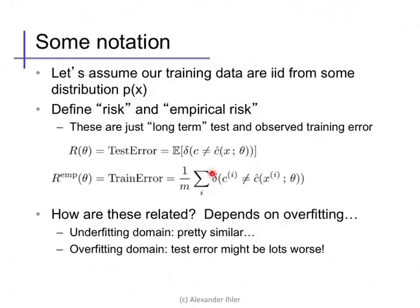The relationship, as we've seen, between the risk and the empirical risk depends on whether we're overfitting. If the model is very simple, and we happen to be in the underfitting regime, their performance will be quite similar. But if our model becomes more and more complex, once it becomes too complex, the test error might actually be far worse than just the training error would suggest.